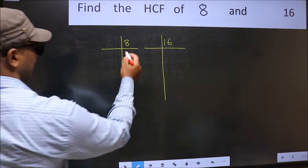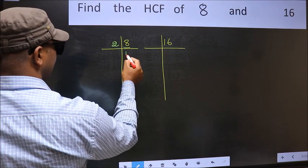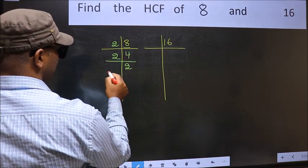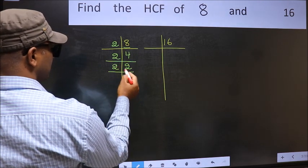Here we have 8. 8 is 2 4s 8. 4 is 2 2s 4. 2 is a prime number so 2 1s 2.